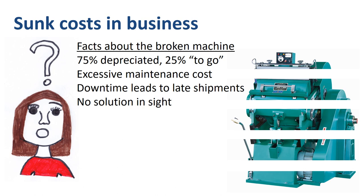Jane is a rational business leader who bases her decisions on facts and the reality of a situation, however grim things might be. She notices that the team has put a lot of time, money, and effort into trying to get this machine back up and running — but that really is all sunk cost; it cannot be recovered. What is the best way to go forward to maximize the performance of the manufacturing side and the business?